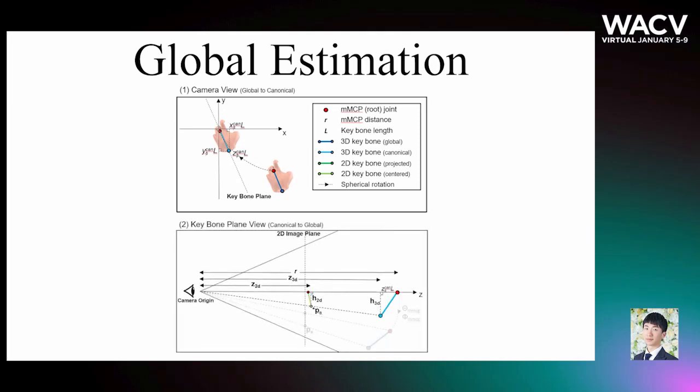During testing, we estimate the depth of the hand pose using the 2D and 3D canonical pose information, camera intrinsics, and actual keybone length. Translate the hand along the Z axis to its estimated distance, and spherically rotate it back to its estimated global position, reversing the steps we used to generate the 3D canonical poses from 3D global poses.